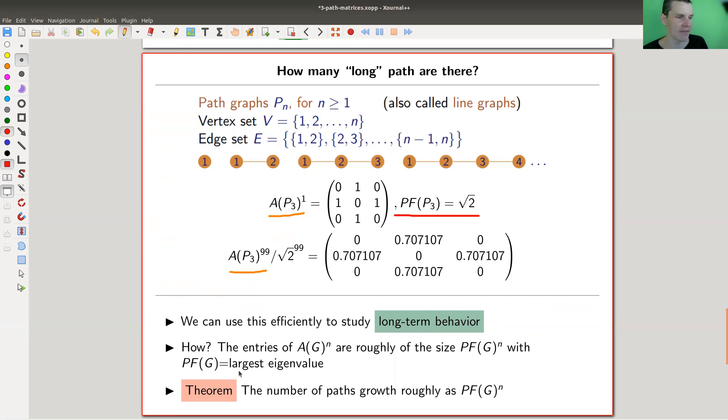The largest eigenvalue here is usually called the PF eigenvalue of the matrix itself. So just an eigenvalue problem of a matrix. In this case, for example, you see that the eigenvalue is square root of two. Happens here. In what sense is it helpful? In the following sense: the 99th power, or in general a very high power, is essentially of the order of the nth power of the eigenvalue itself.